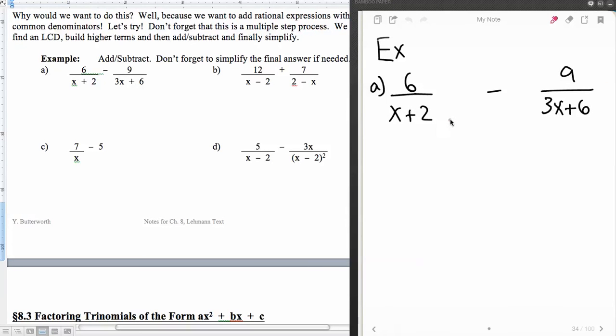So with this one, we already found the least common denominator. So our least common denominator, we found for this one to be 3 times x plus 2. So now what we're going to be doing is building the higher terms. So we see that this one already has the higher terms, so we're not doing anything, and we just have to say, what's missing from this one? So that's a 3. So we're going to multiply top and bottom.